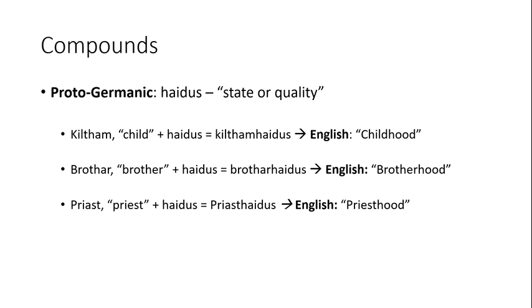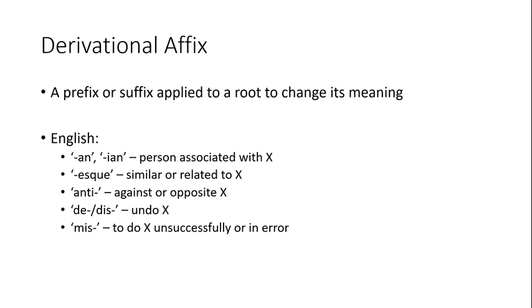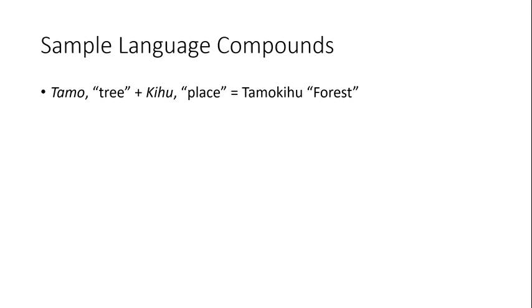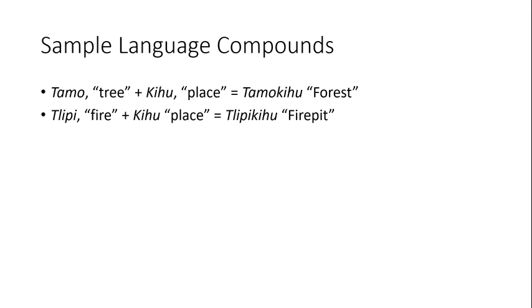But sometimes a word can become so frequently compounded with other words that it loses its core meaning altogether, becoming something that we call a derivational affix — a bit that you stick on to a word to change its meaning. So looking at our words, we've already got tree place, but what about if we wanted to make a word for a place where there's fire, or a fire pit? Well, we can pull the exact same trick we did for tree place to make fire place.